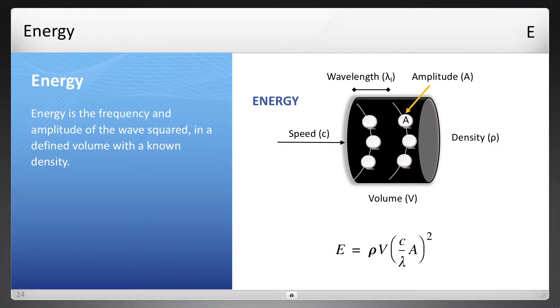And you package that all up with the four variables for waves that I mentioned earlier: speed, wavelength, amplitude, and density in a given volume, V, and there's the equation for energy. And we'll use this later for the calculations of particles and photons and much more.